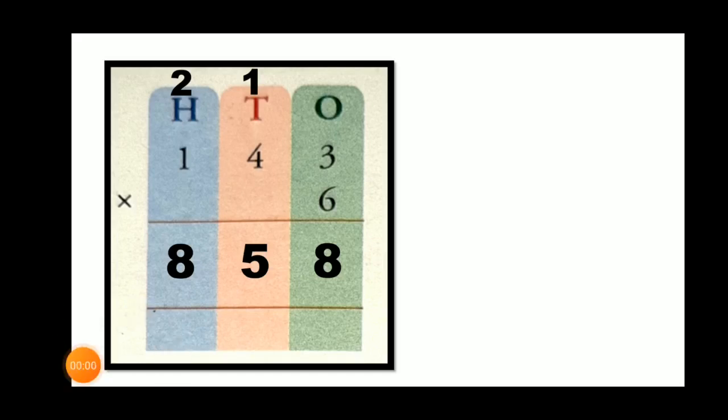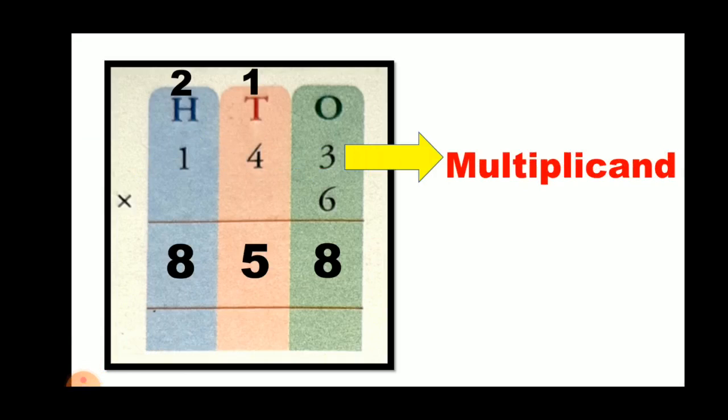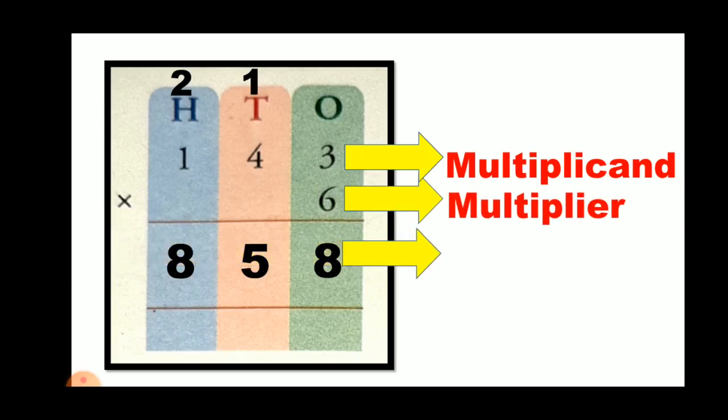Now my dear children, here 143 is known as the multiplicand, 6 is known as the multiplier, and the answer is the product.